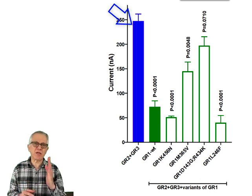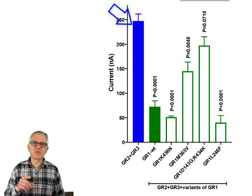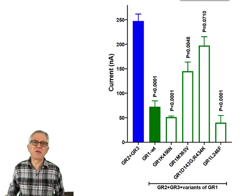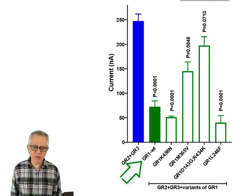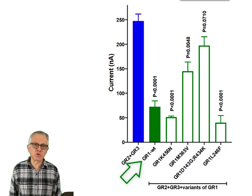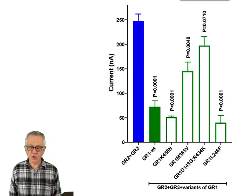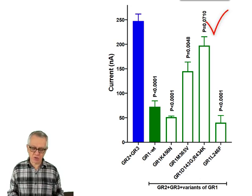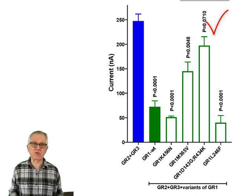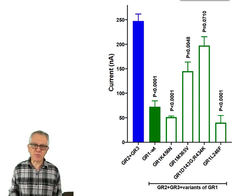We then tested the receptor containing GR2 and GR3 alone versus GR1, GR2, and GR3 using different variants. For example, in the green trace, this is the combination of all three receptors compared to the two receptors in blue, and we see a much lower response to sodium bicarbonate. All other variants also gave a lower response than the combination of the two receptors alone. The only variant not significantly lower is the one with two point mutations. Regardless, all of them reduce the response of the receptor to bicarbonate.